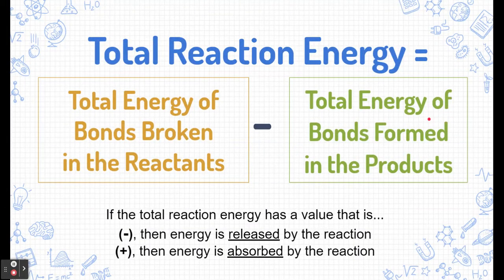Now we can take all of those bond energies and determine the total reaction energy by following this equation. To determine the total reaction energy we typically add up all of the energy of all the bonds broken in the reactants and subtract the total energy of all the bonds formed in the products. Now when we calculate out our answer, depending on the sign of our answer, if it's a negative sign, then we know that energy is released by that total reaction. If it's a positive sign, then energy is absorbed by the reaction.